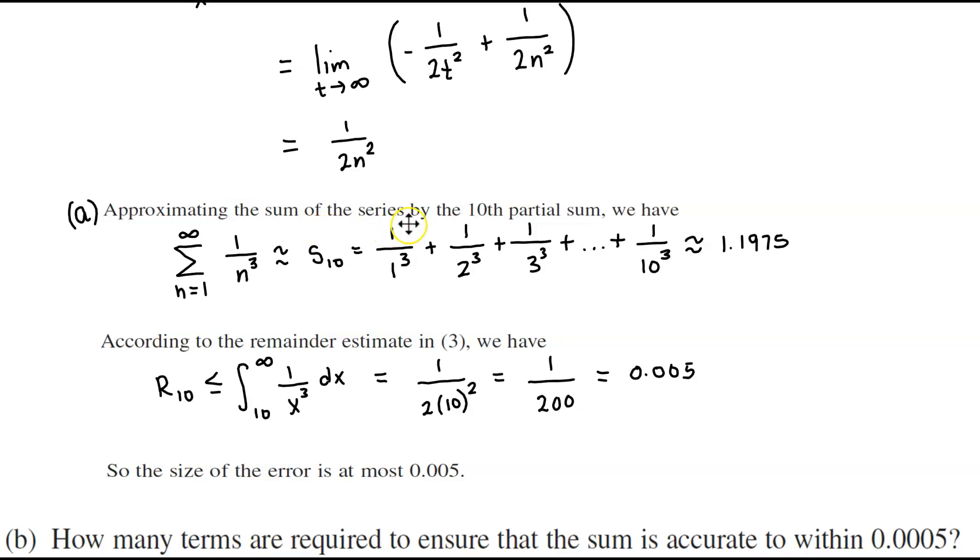Now approximating the sum of the series by the 10th partial sum, we would have the following. 1 over n cubed would be approximately s subscript 10, which is equal to 1 over 1 cubed plus 1 over 2 cubed plus 1 over 3 cubed, all the way to 1 over 10 cubed, adding them up is approximately 1.1975.